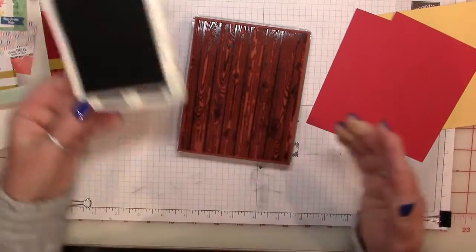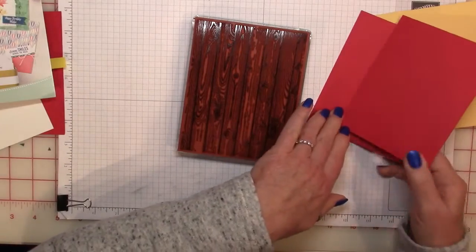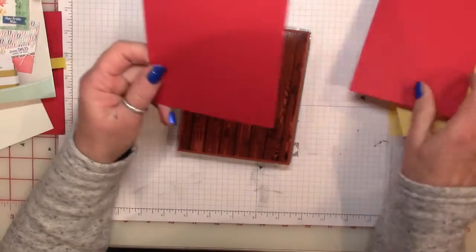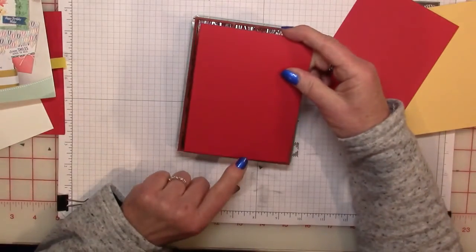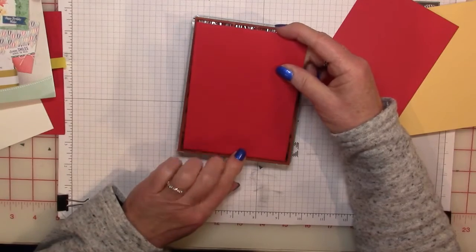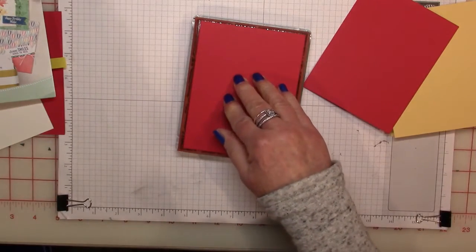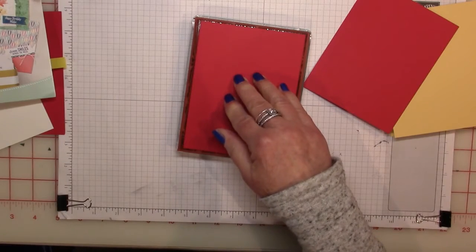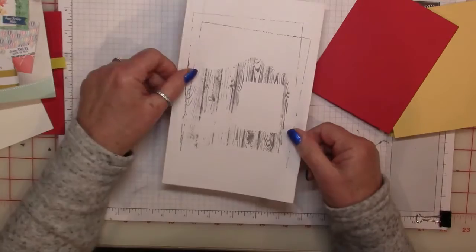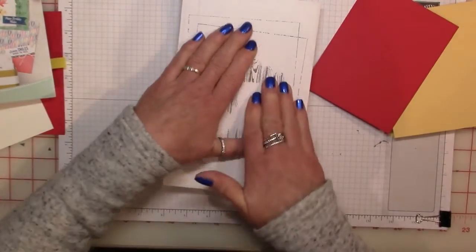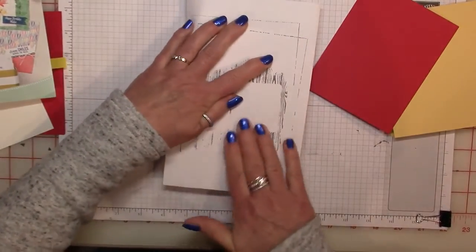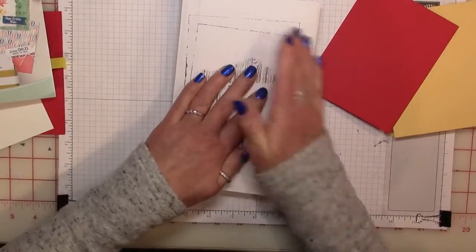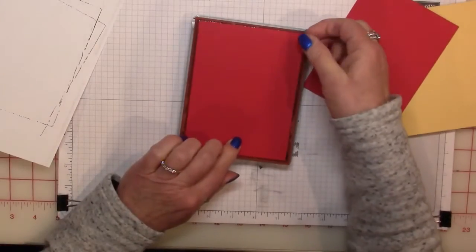So to start off with, you basically need two pieces of card. These are basically four and a quarter by five and a half, and we're going to ink up this one. Now I like to place a piece of scrap paper on top so that I don't get ink all over my fingers and I give it a good rub.